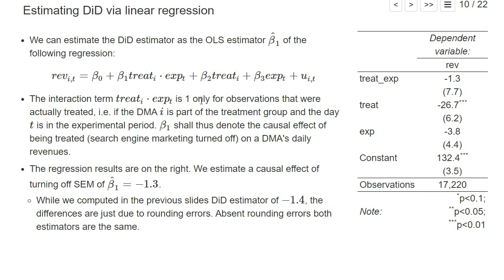This interaction term treat_i multiplied by exp is one only for those observations that were actually treated — where the DMA is in the treatment group and the day is in the experimental phase; otherwise it is zero. This is the natural explanatory variable to estimate the treatment effect. But we also add two more dummies: a dummy for whether the DMA was treated or not, and a dummy for whether we are in the experimental period or not.